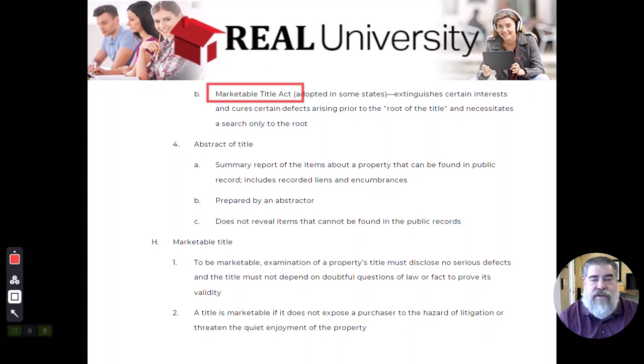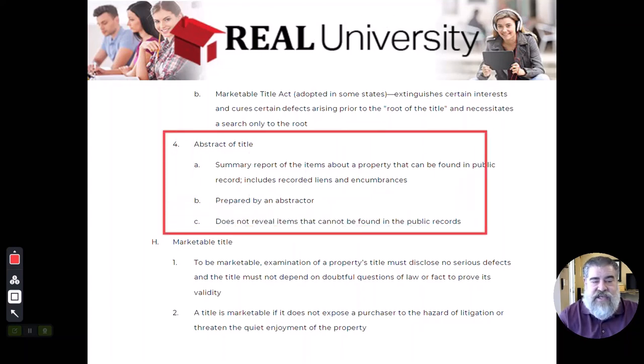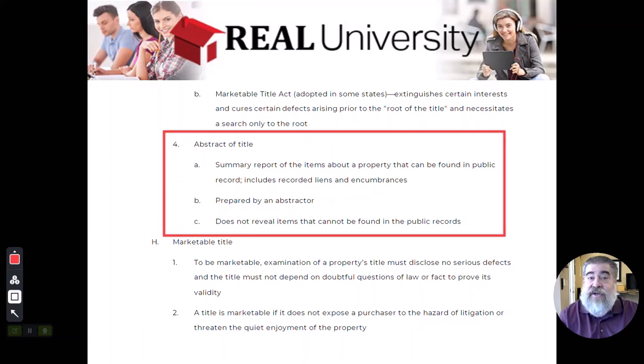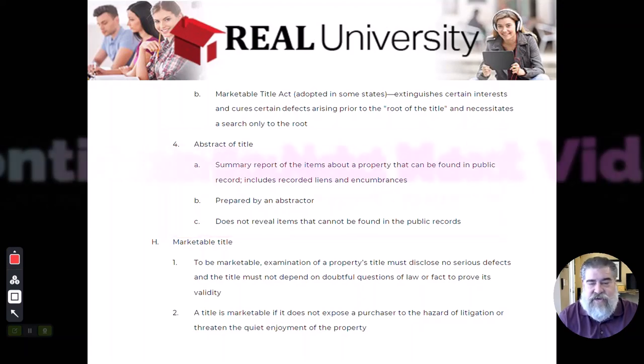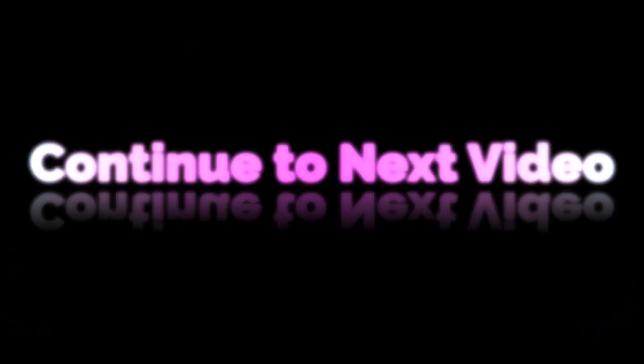What they are trying to create with this private and this public search is a thing called a marketable title. That marketable title will extinguish all of the other liens that are out there, like the Sears example, because of the public and private search. That is what they're trying to create. The person that does this is the abstractor. Once again, there's the OR, the person that actually goes out and searches the public records. This actually is a pretty good high paying job, but it's very stressful because you can't miss anything. You've got to make sure that you find it so it can be stress induced.